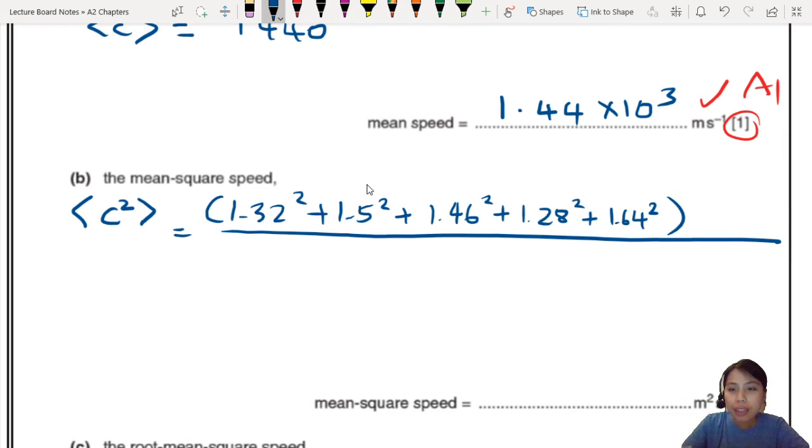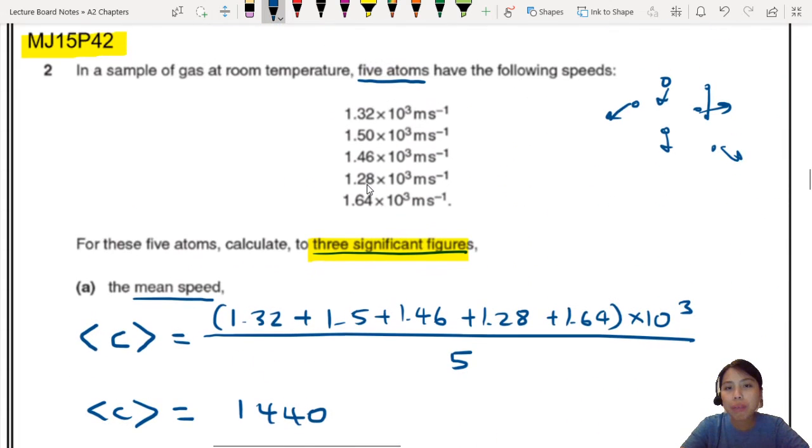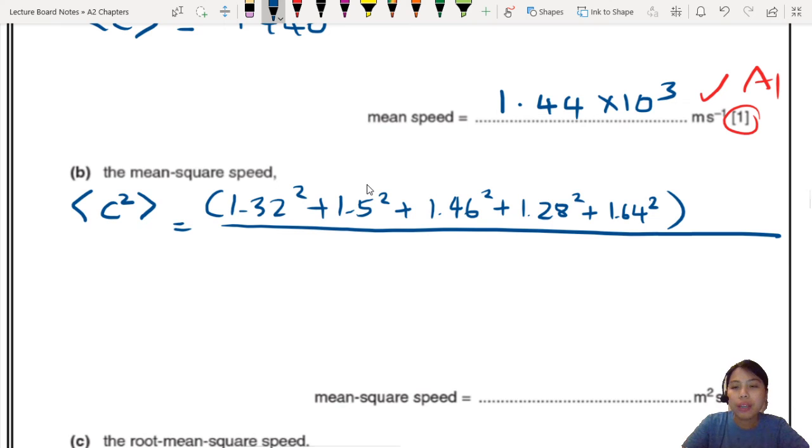So I will just write out the whole thing again. There, that's everything. Oh, but I forgot the power, right? It's all times 10 to the power of 3. So I need to times 10 to the power of 3, but I need to remember that this is also squared. I just factor it out because I don't want to keep writing times 10 to the power of 3. It's just very long. Divide by 1, 2, 3, 4, 5.